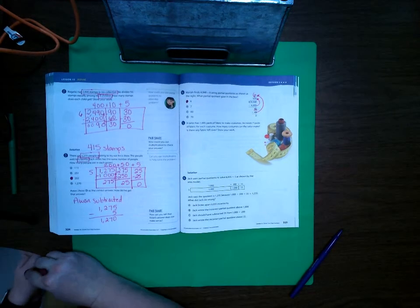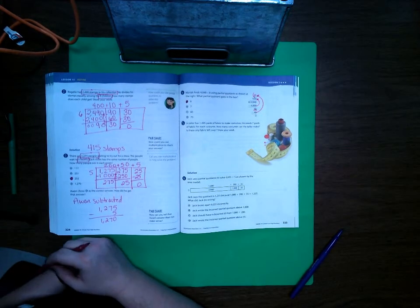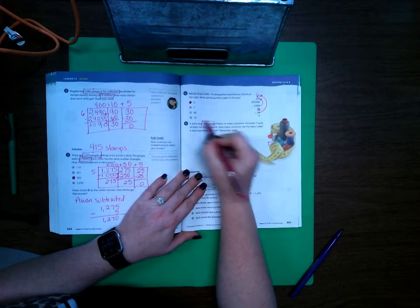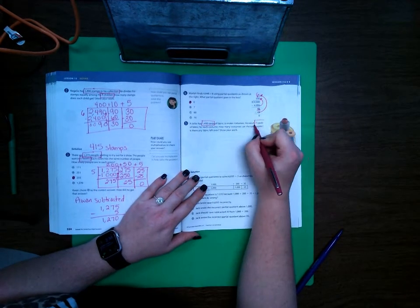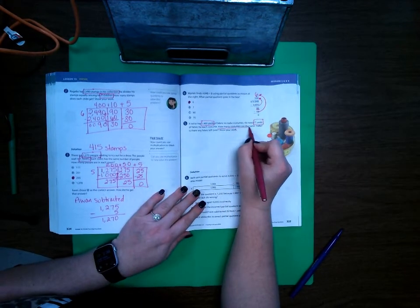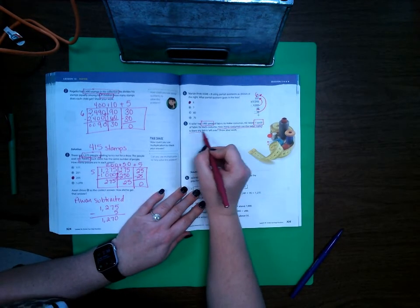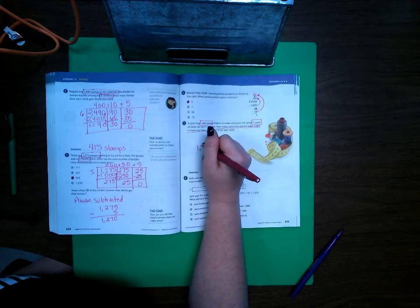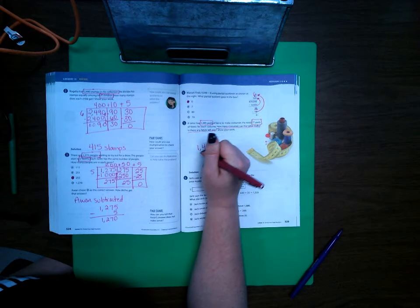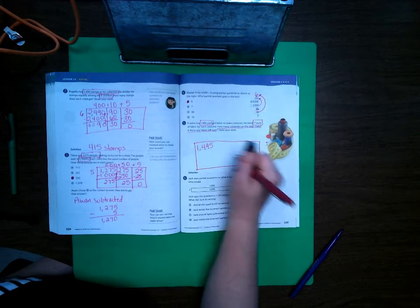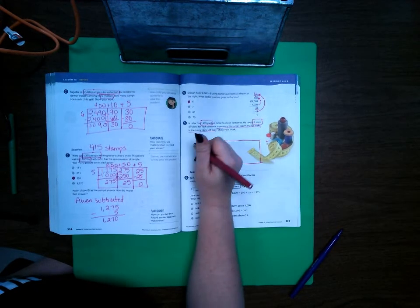Number 5: A tailor has 1,495 yards of fabric to make costumes. He needs 7 yards of fabric for each costume. How many costumes can the tailor make? Is there any fabric left over? So let's go ahead and do our area model: 1,495 by 7.